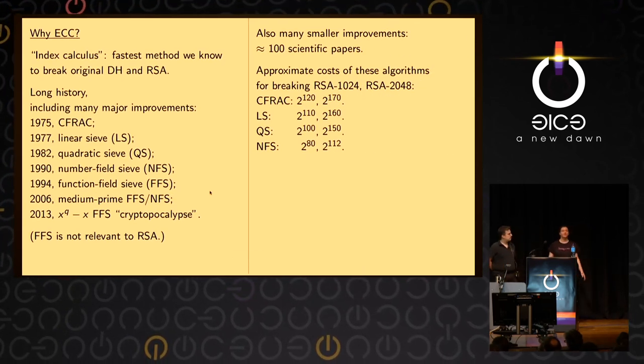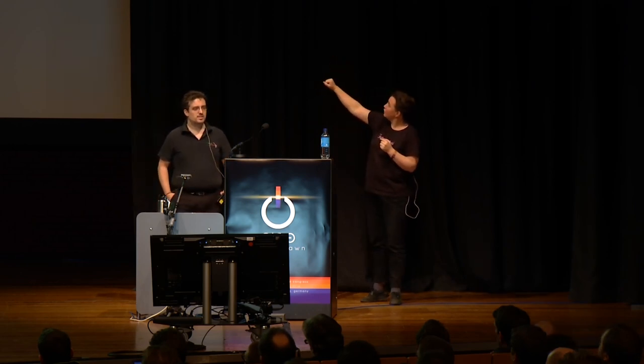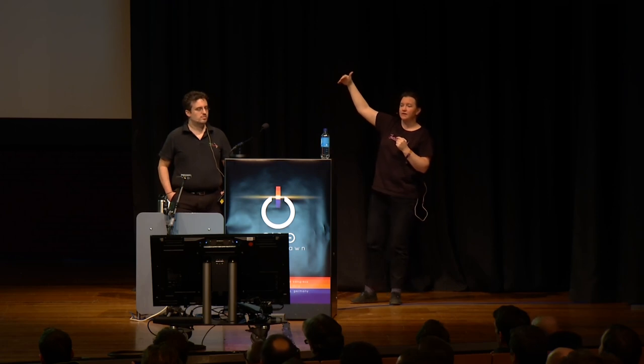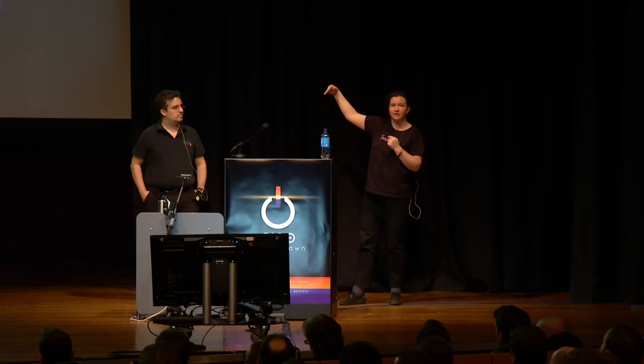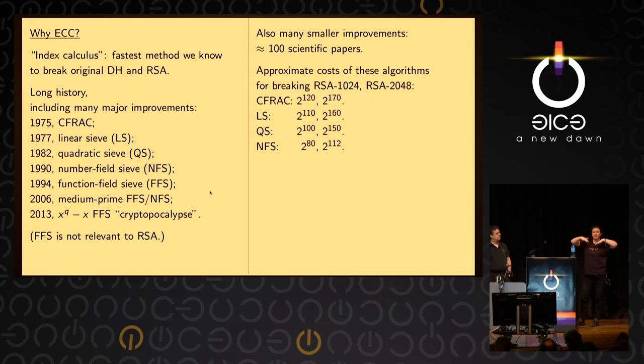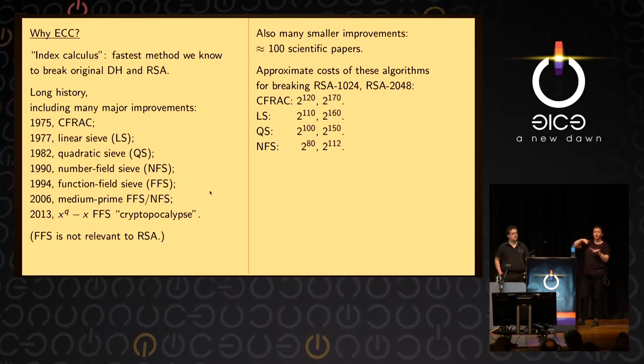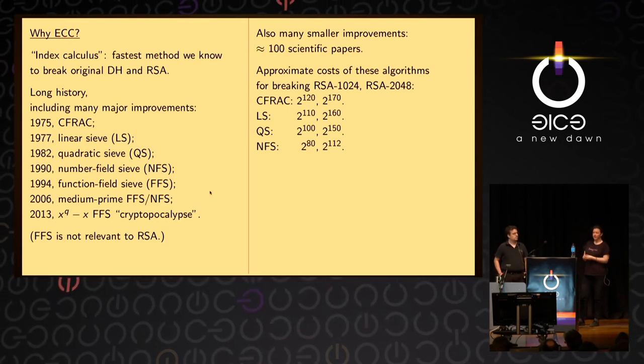This is not the whole story. There are also lots of improvements in academic literature. When you look at the security of typical RSA sizes — RSA 1024, which you still see a lot on the internet, and RSA 2048, which hopefully your bank is using — you can see how much the security has decreased. Back in 1975, CFRAC would take 2^120 operations. With the number field sieve in the 1980s, that dropped to 2^80. It's not just a linear decrease in the exponent — it's much more than linear. RSA 2048 went from a security level of 2^170 down to about 2^112.